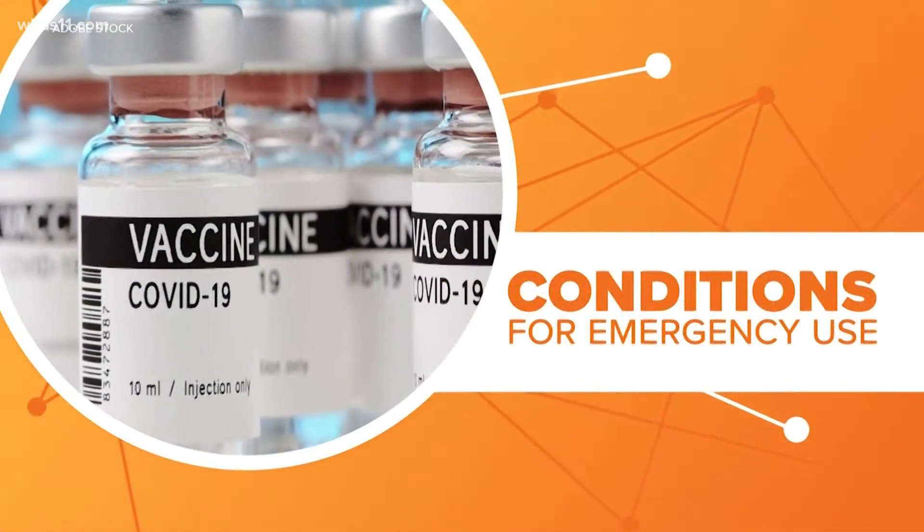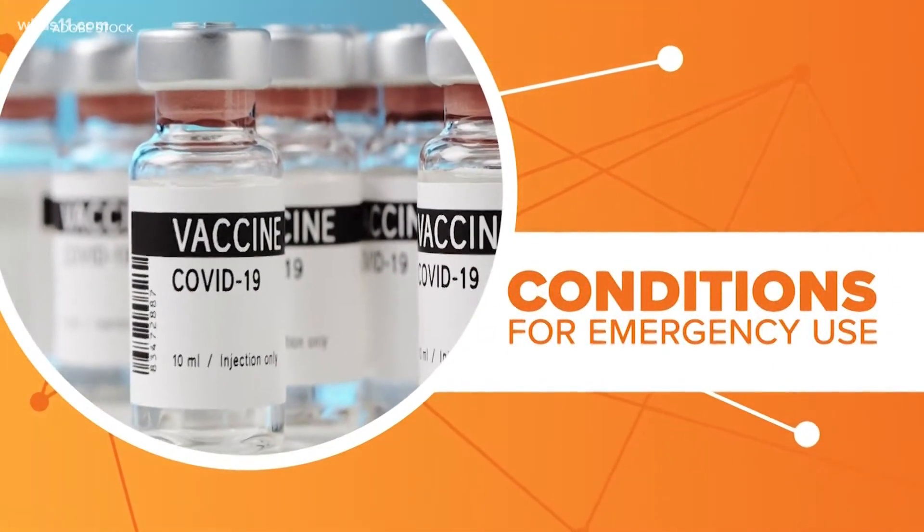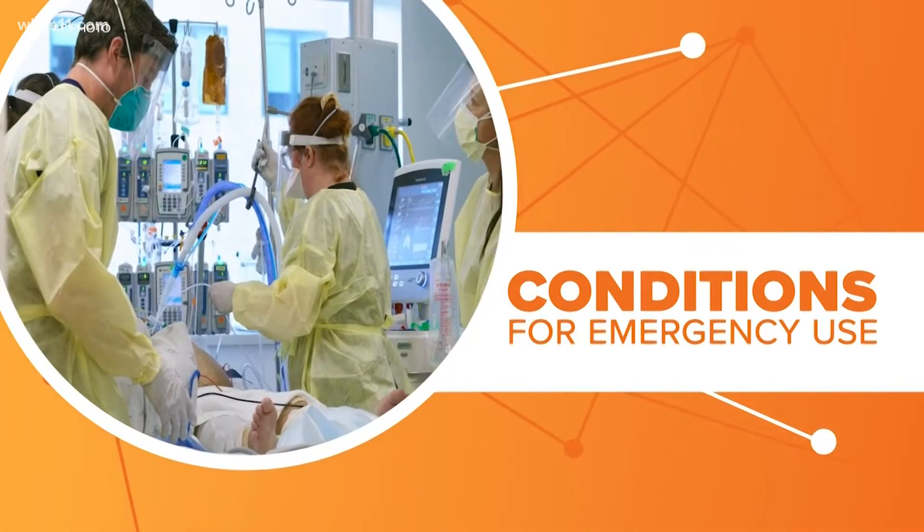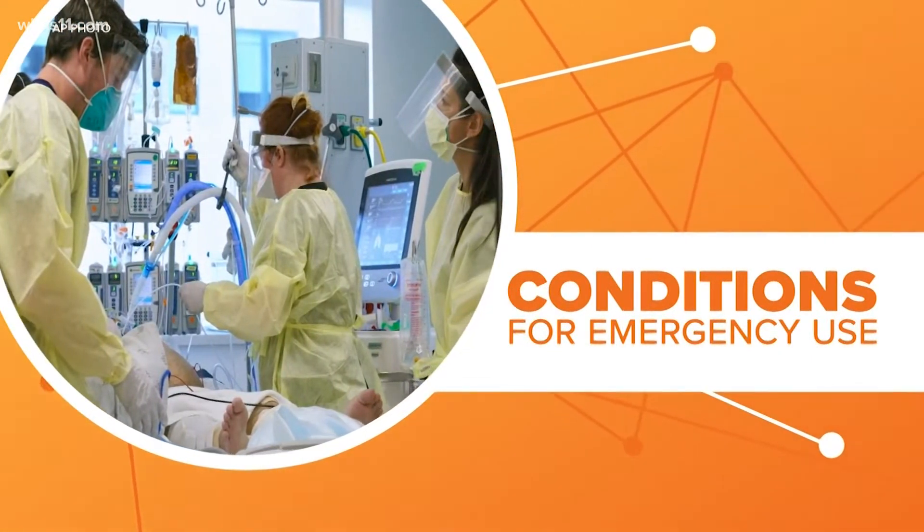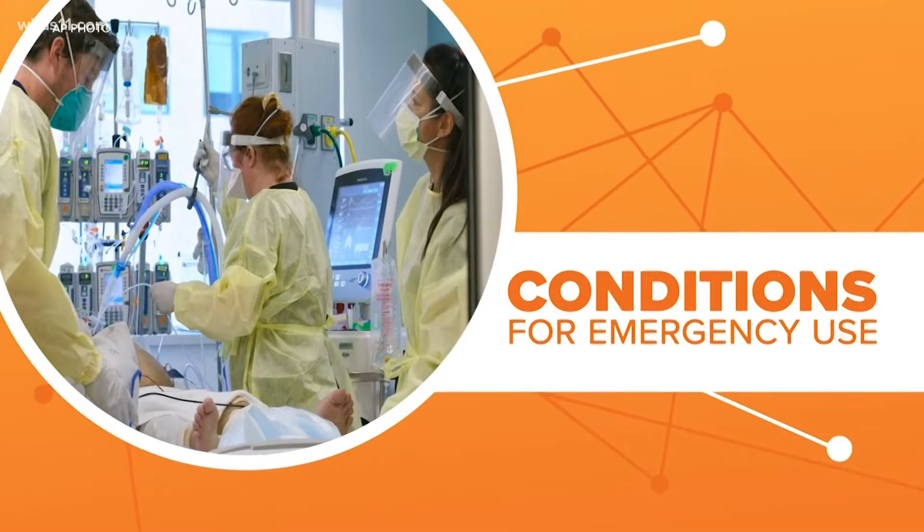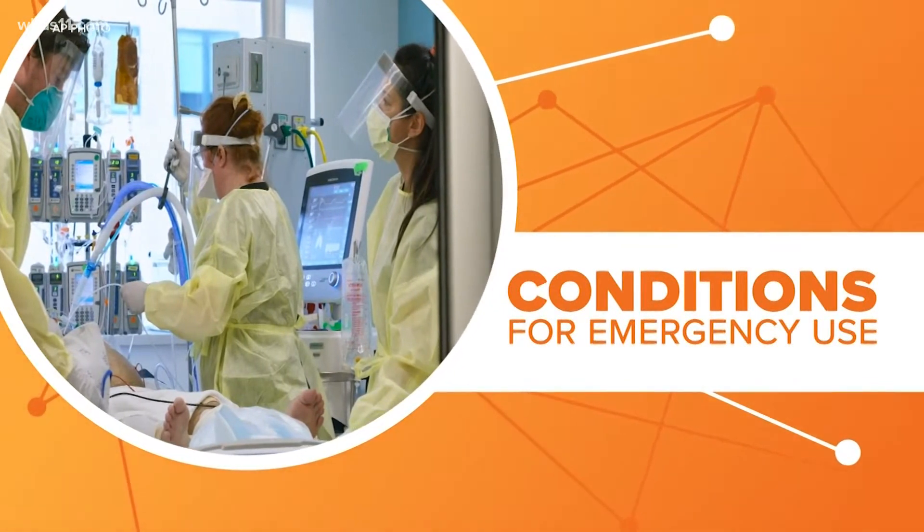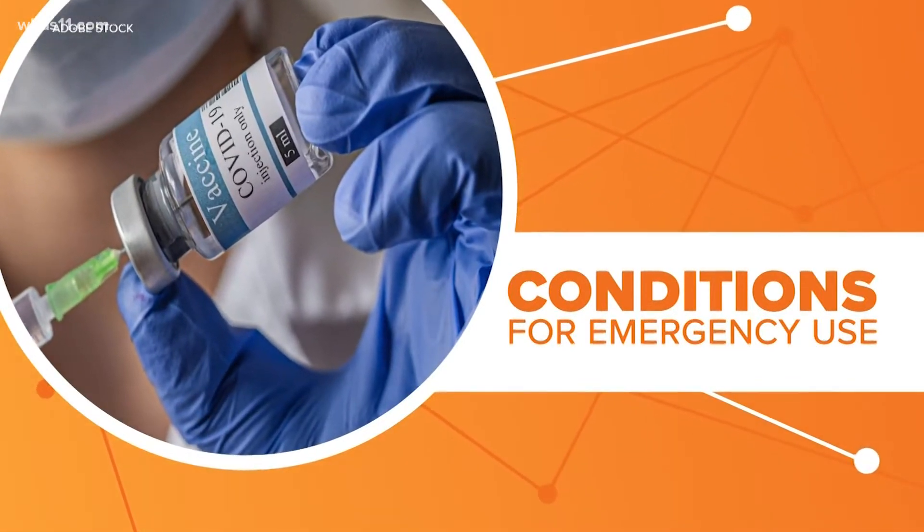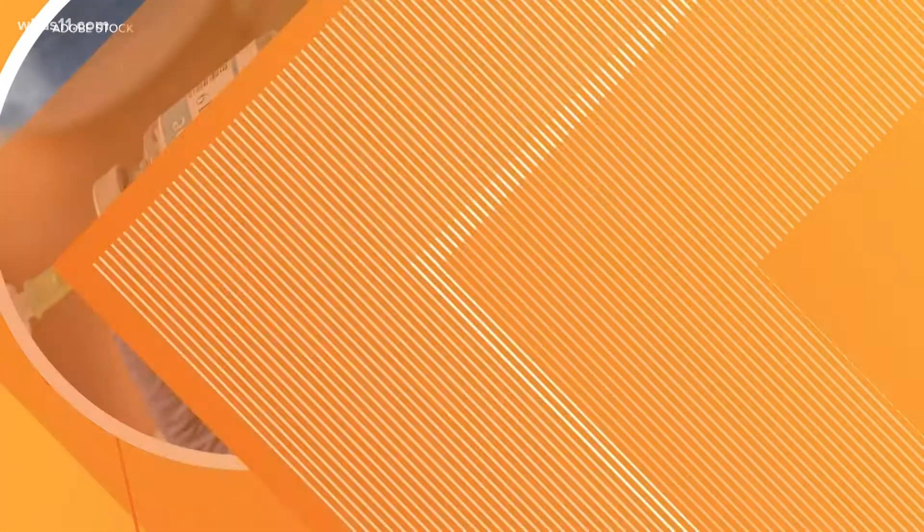First, let's review what emergency use authorization means. It's basically a shortcut for a crisis. An EUA can be given if there are no adequate or approved alternatives to diagnose, treat or prevent serious or life-threatening diseases or conditions. So something can get an EUA if the potential benefits outweigh any potential risks, according to Norton Healthcare.